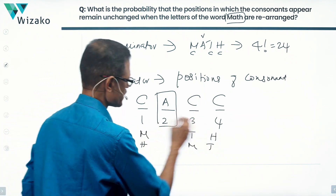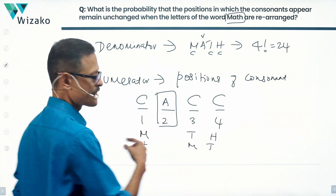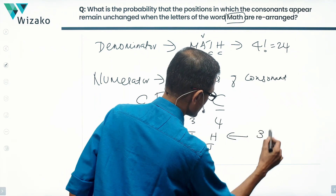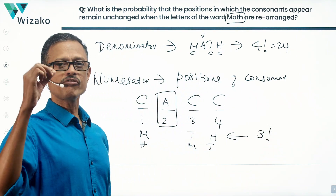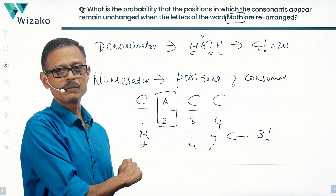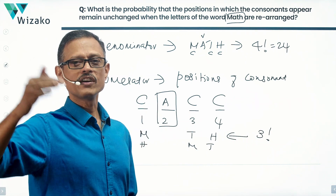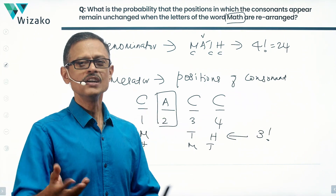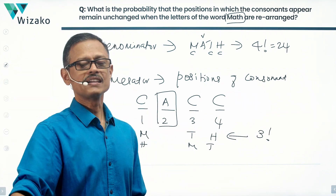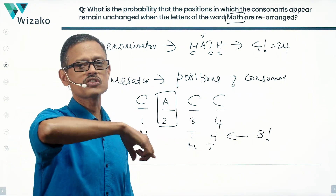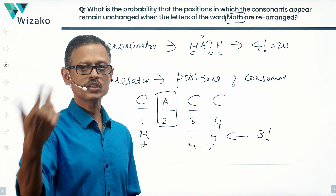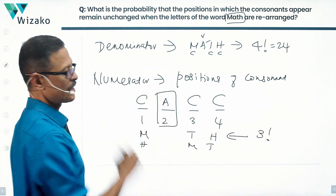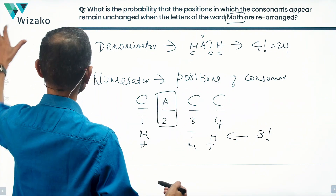So the consonants occupy positions one, three, and four. There are three distinct consonants — M, T, and H — and they can reorder in those positions in three factorial ways. So three factorial rearrangements will have A in the second place and the consonants in the first, third, and fourth places. That's the favorable case. Three factorial equals six, which are the favorable cases, and four factorial equals twenty-four, which is the total number of outcomes.